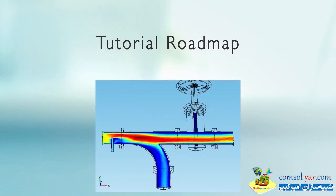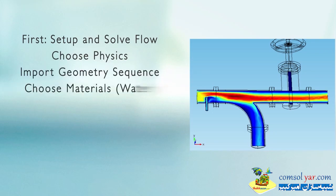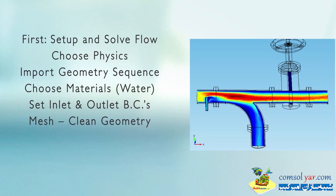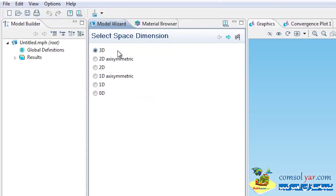We'll do this simulation in two steps. First, we'll set up and solve the flow problem as if the gate valve isn't there geometrically — we won't handle the gate until the second step. The procedure: choose the physics (Navier-Stokes), import the geometry sequence, choose materials (water), set inlet and outlet boundary conditions, mesh it, clean up any mesh issues, remesh, and then solve.